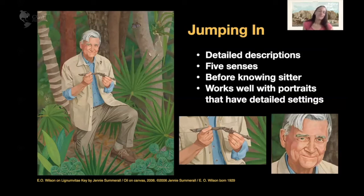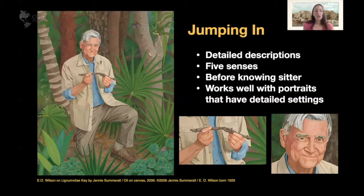So now your students have used their observation skills, without any label information and without having to read any text, to visually read the portrait and identify a gentleman who is comfortable with ants crawling on him and who loves the study of bugs. This gentleman's name is E.O. Wilson. After your students have jumped in and read the portrait, you can discuss his biography and his important contributions to science. He's one of the world's leading experts on ants, and he has studied exhaustively the way that ants communicate. This is a particularly appropriate portrait to use with world language teachers, as it's about how animals communicate — which can be a springboard to talk about the importance of communicating across cultures and languages.